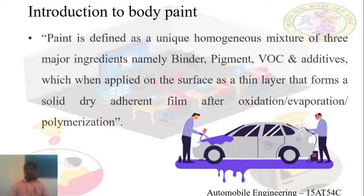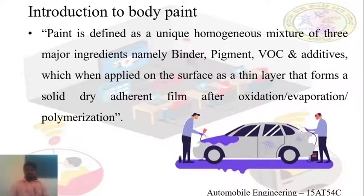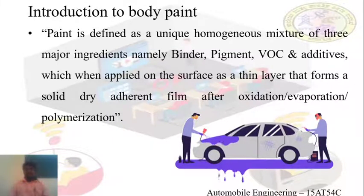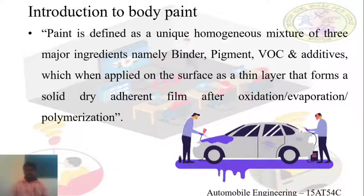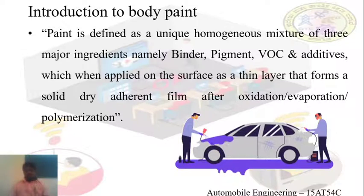Let's start with the body paints. If you can define the body paints, it's a unique homogeneous mixture of three major ingredients — namely a binder, pigment, and additives. These three mixtures make the paint. A thin layer of paint is provided and we dry it after some time. The drying process may be either due to oxidation, evaporation, or polymerization.